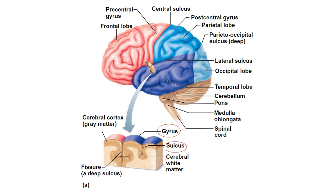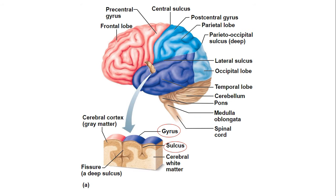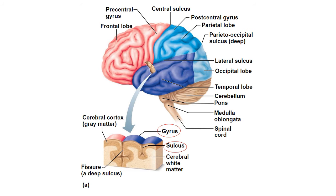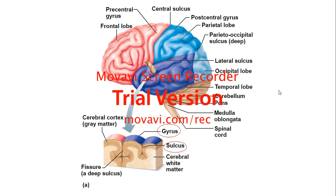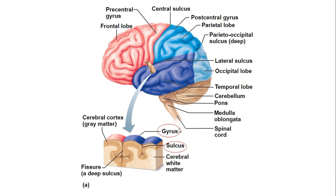Each of your lobes have different functions. A lot of what we know about brain functions was learned from accidents where people damaged different parts of the brain, and also from strokes. When people have strokes, certain parts of the brain can be affected depending on what area the stroke hit. From observing how strokes affect facial muscles or cause paralysis on one side of the body, we've learned a lot about different brain functions. Also be aware that anything circled in red on the figures you should definitely know.